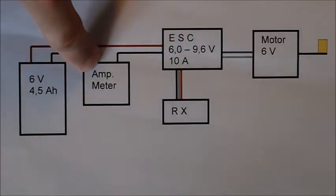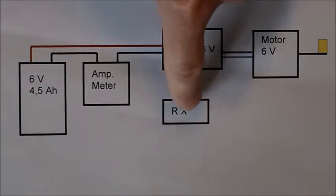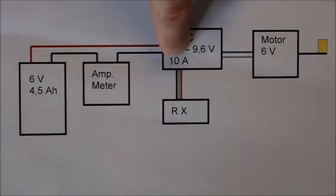The battery is a 6 volt battery with 4.5 ampere hours capacity. The electronic speed controller accepts around 6 to 9 volts and has a limit of 10 amperes.